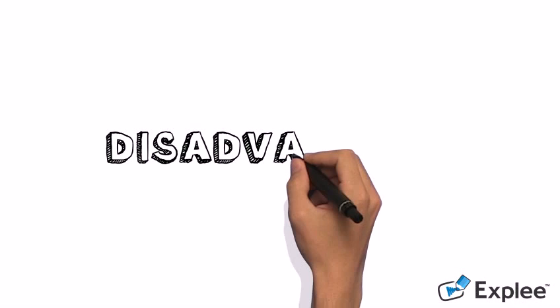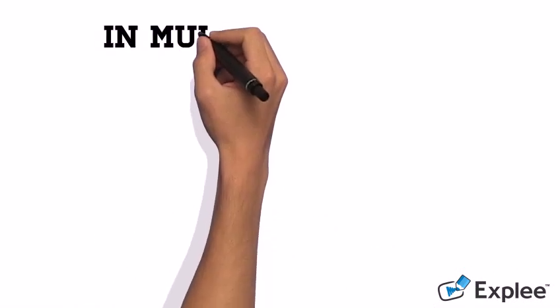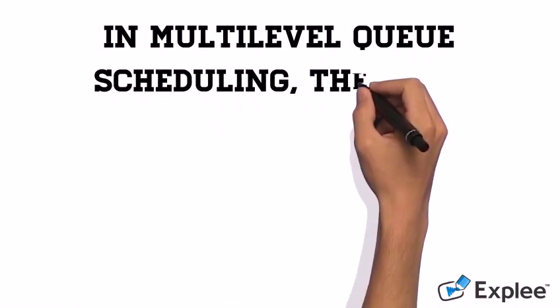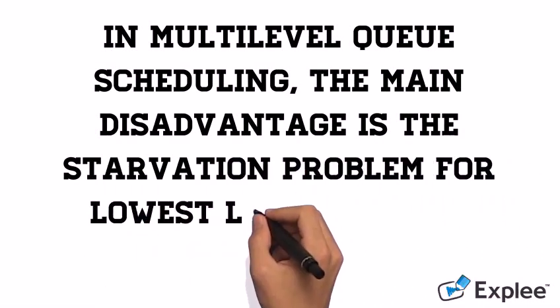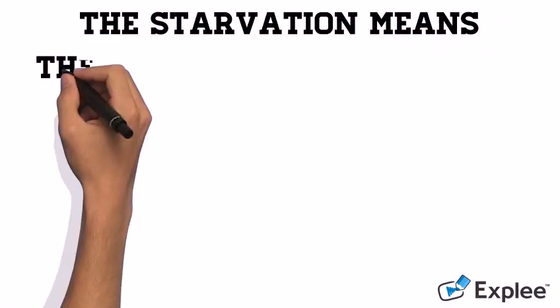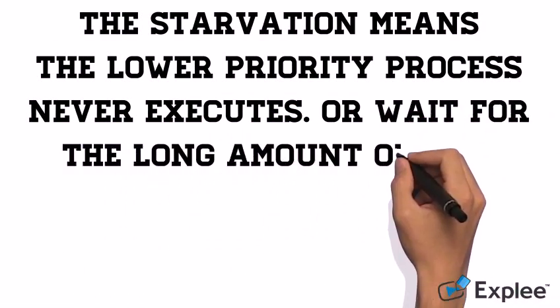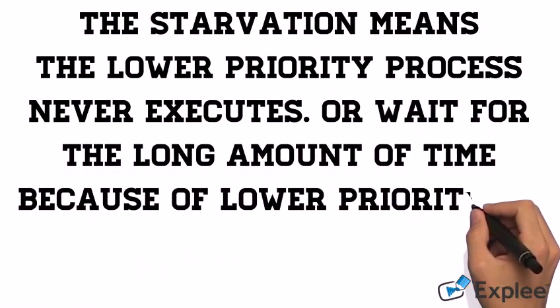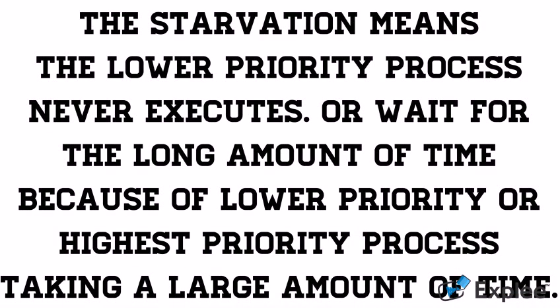What about the disadvantage of multi-level queue? In multi-level queue scheduling, the main disadvantage is the starvation problem for lowest level processes. Lowest priority will wait for a long amount of time because higher priority processes take a large amount of time.